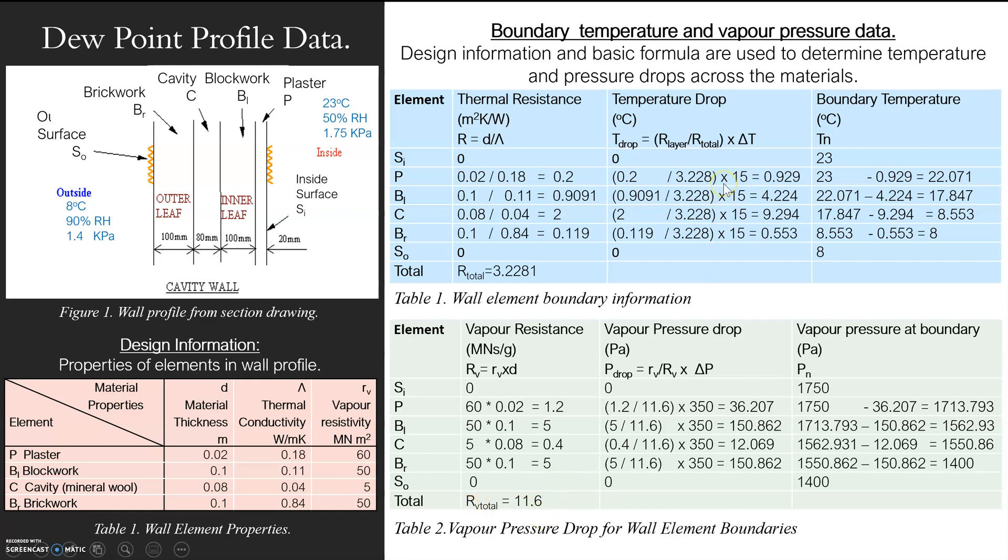I do exactly the same as the difference temperature across here: pressure drop. So I basically get my resistance of my plaster. I divide it by the total resistance for the whole material, the whole wall. And then I times it by the difference in pressure between the outside and the inside. And that gives me my ratio. It's basically telling me how much of this pressure is going to be resisted by this specific material.